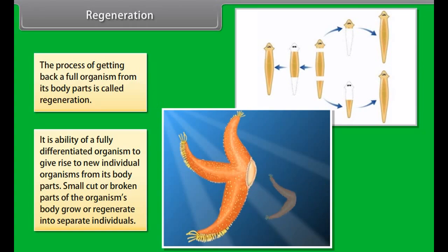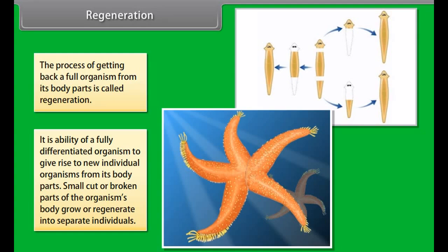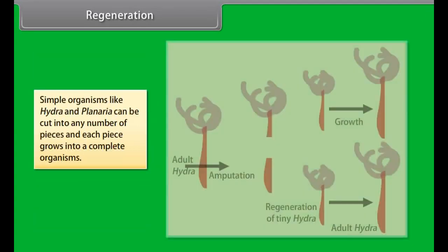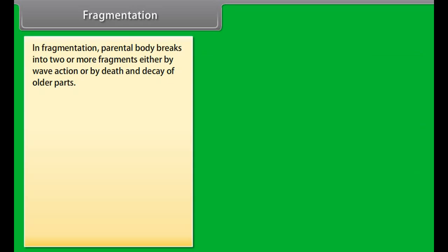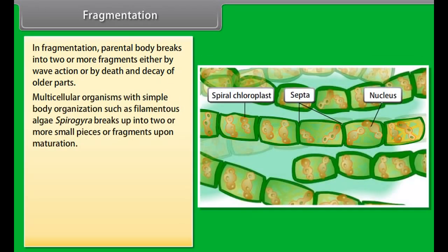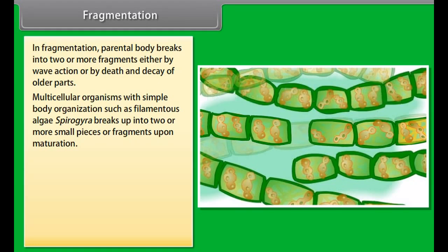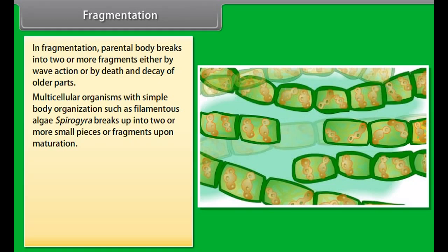The process of getting back a full organism from its body parts is called regeneration. It is the ability of a fully differentiated organism to give rise to new individual organisms from its body parts. Small cut or broken parts of the organism's body grow or regenerate into separate individuals. Simple organisms like hydra and planaria can be cut into any number of pieces and each piece grows into a complete organism.